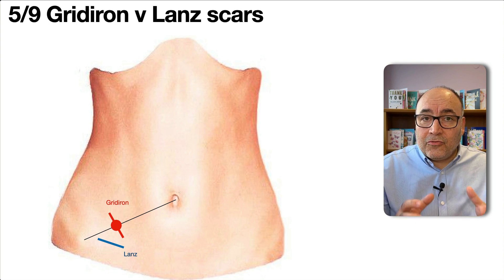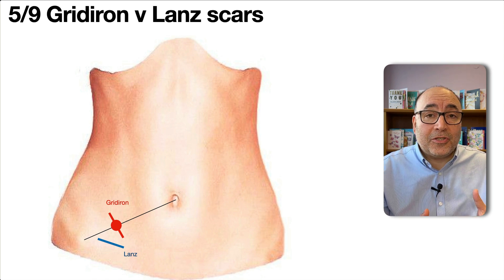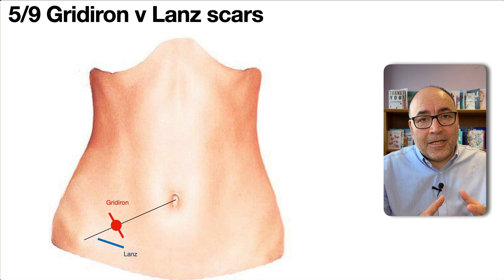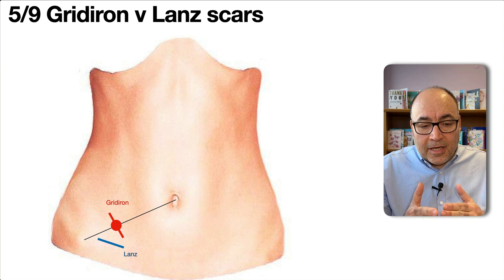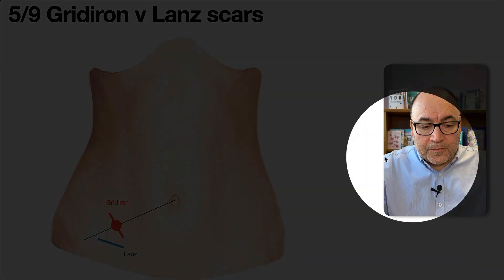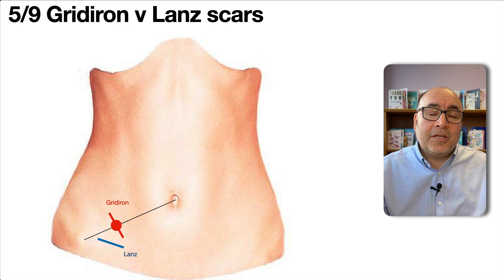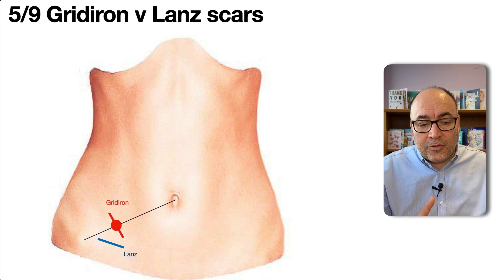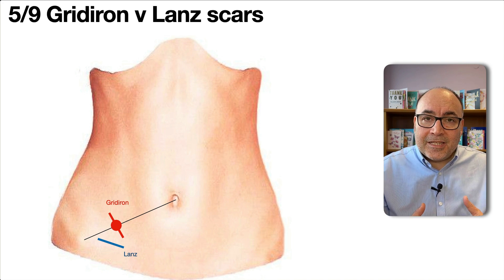Next up, gridiron versus Lanz scars and incisions. Most appendectomies nowadays are done laparoscopically, but you may see a scar in the right iliac fossa. The gridiron incision is over McBurney's point at 90 degrees to the line connecting the umbilicus to the anterior superior iliac spine — it is a muscle-cutting incision. The Lanz incision is a muscle-splitting incision, considered more cosmetic as it is lower and more horizontal.